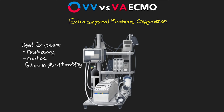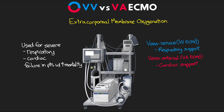There are two main types of ECMO. Venovenous or VV ECMO is our respiratory support, and then we have Venoarterial or VA ECMO, which is our cardiac support. Both of these types use almost all the same equipment, with the major exception being the type of cannula. The main thing that makes them so different is where the blood is going to be returned, and both are considered dual cannula configurations.